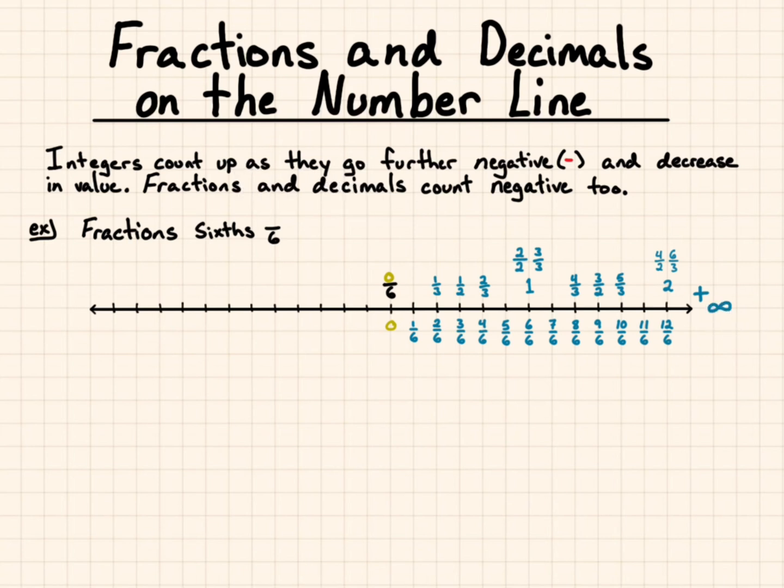As we're going negative, they count away from 0 the same way that integers do, if I'm counting sixths. And the equivalent fractions mirror along 0, so it goes towards negative infinity.